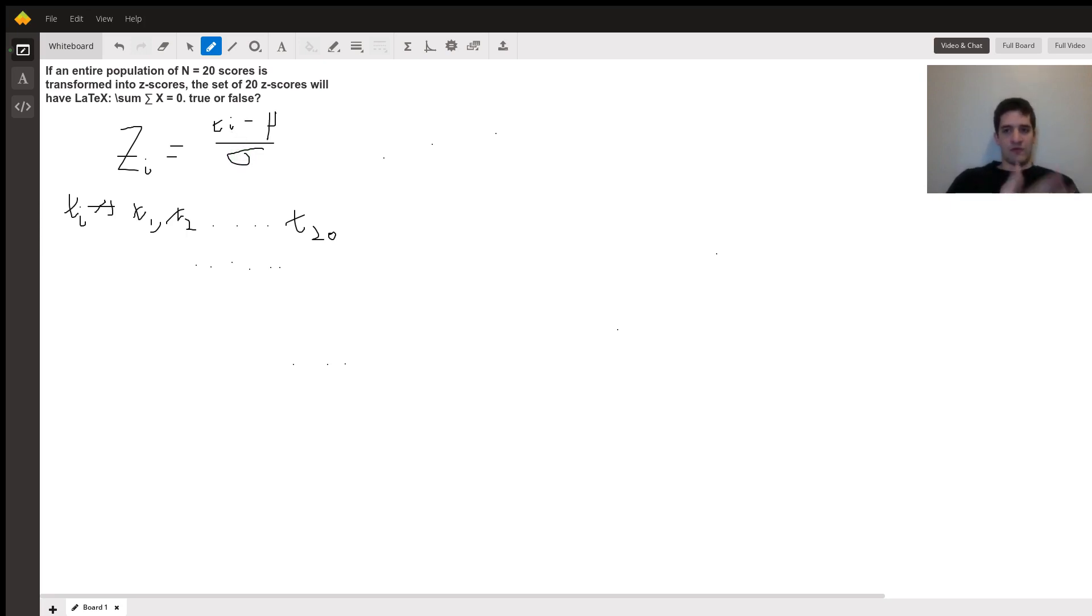So again, x1 would be your first score, x2 would be your second score, and so forth. Okay, so now that we've got that out of the way, we want to look at the sum of the 20 z-scores. So we've got i equals 1 to 20, summing up zi.